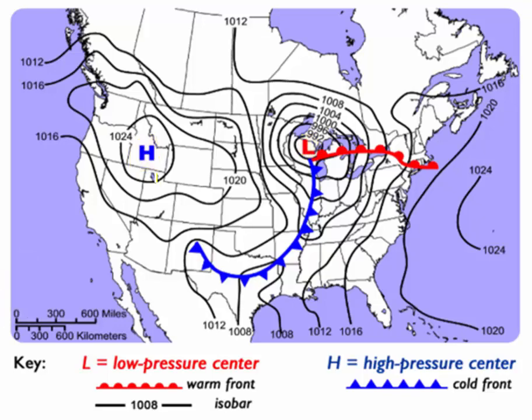So what does this line around the H mean? This line is what we call an isobar, and what it's doing is connecting points of equal air pressure.